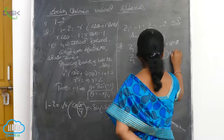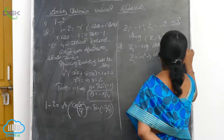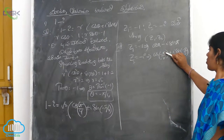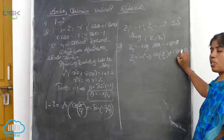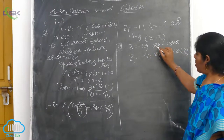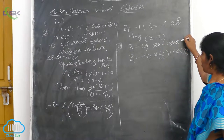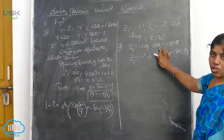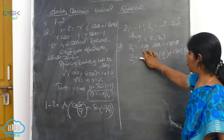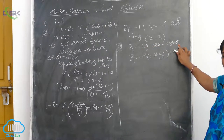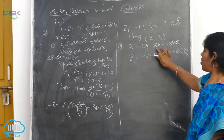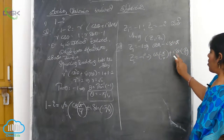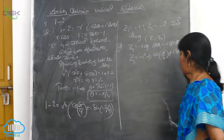Z2 equals minus i, so the argument is minus phi by 2. We write cos(minus phi/2) plus i sin(minus phi/2), which equals minus 1. Cos 180° is minus 1. So i sin phi/2 with the appropriate sign gives the polar form.